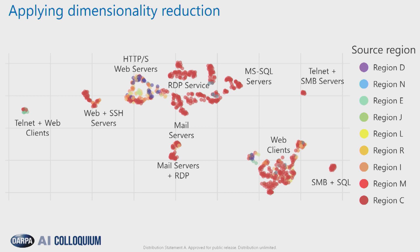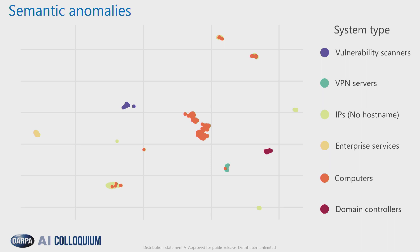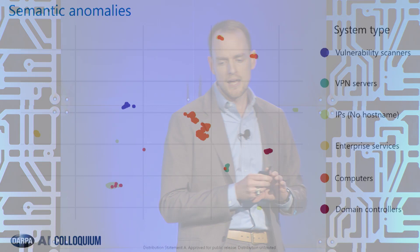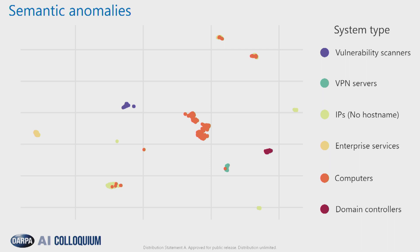Let's look at another use case. Here we've taken network flow from inside of an enterprise and done the same feature representation and dimensionality reduction technique. The one difference is that we know the system roles — however, our algorithm has no knowledge of this. We can see that our algorithm in an unsupervised fashion has successfully captured the differences between our different classes. It's successfully unpacked the high-dimensional manifold into two dimensions where we can understand it. We see a large cluster of computers in the middle in orange, vulnerability scanners very well clustered in purple, and down to the right, domain controllers clustered in maroon.